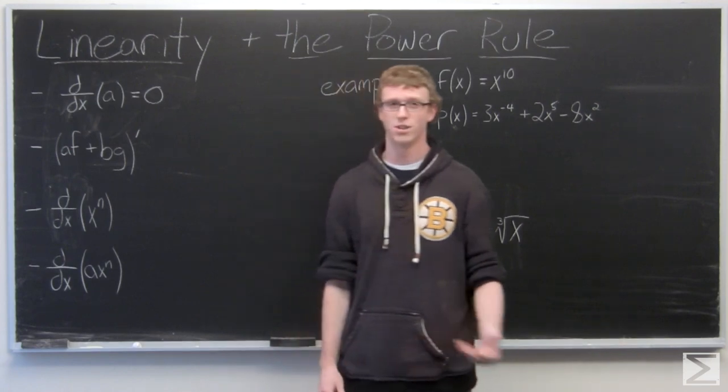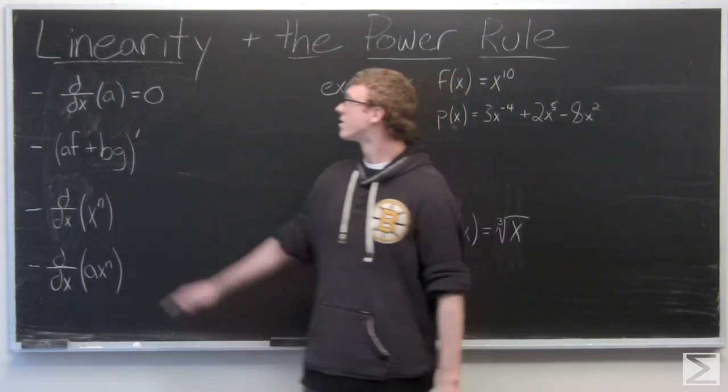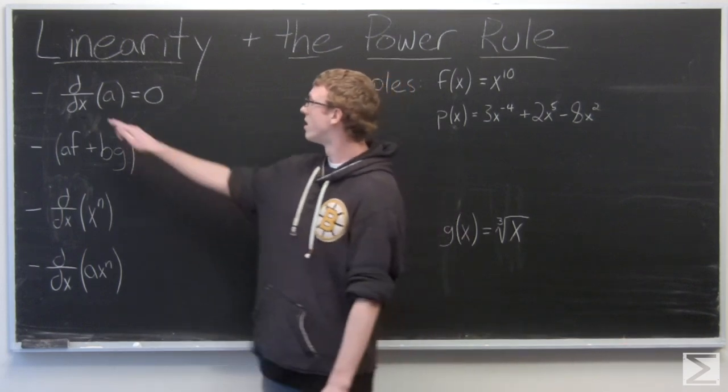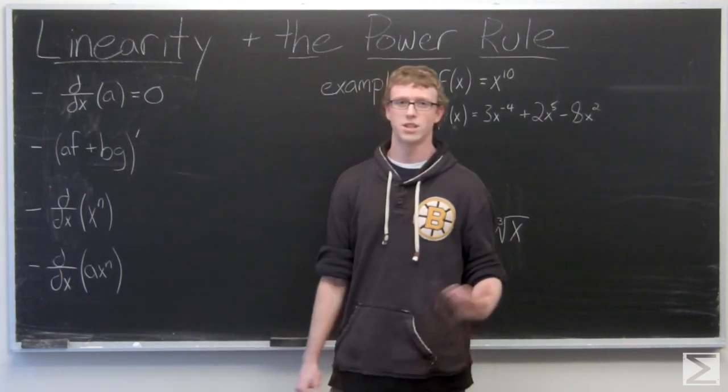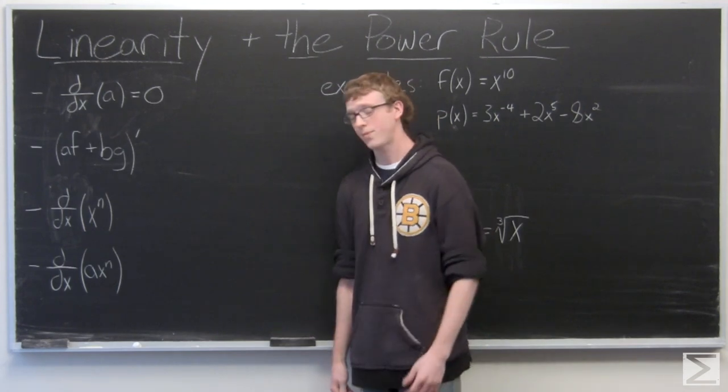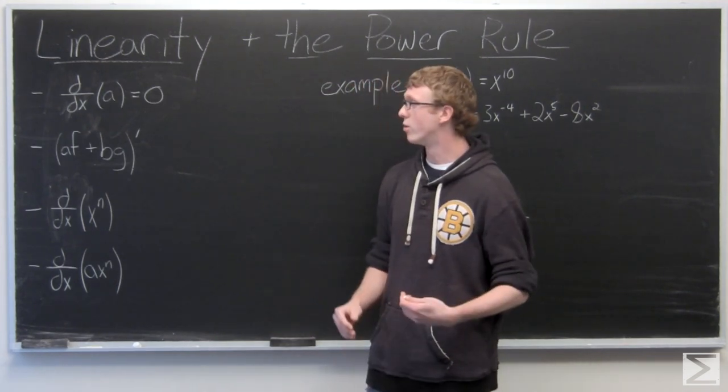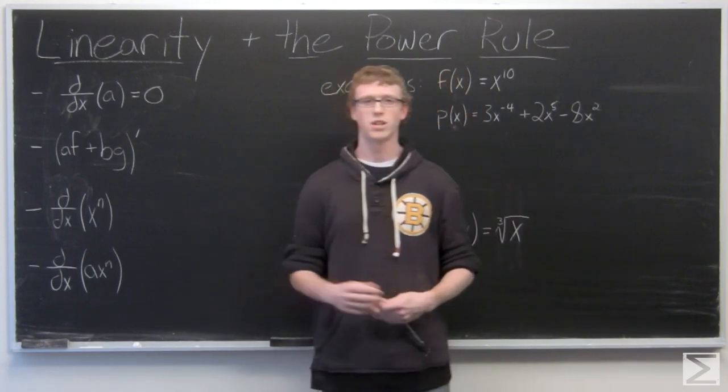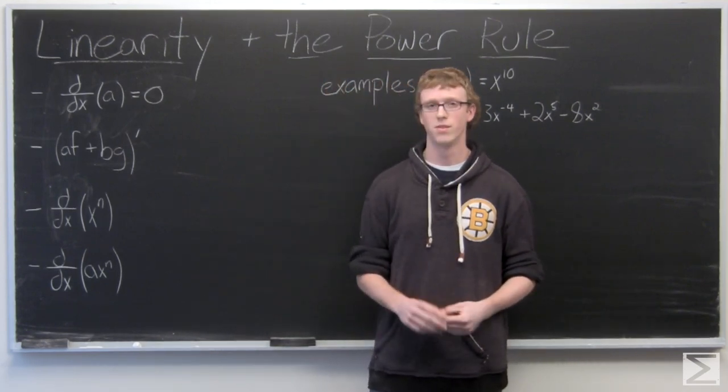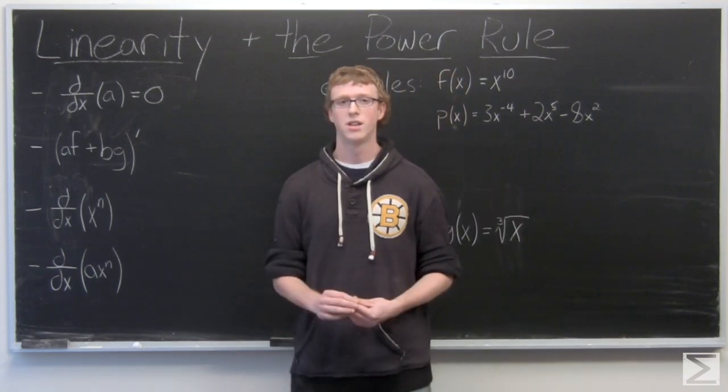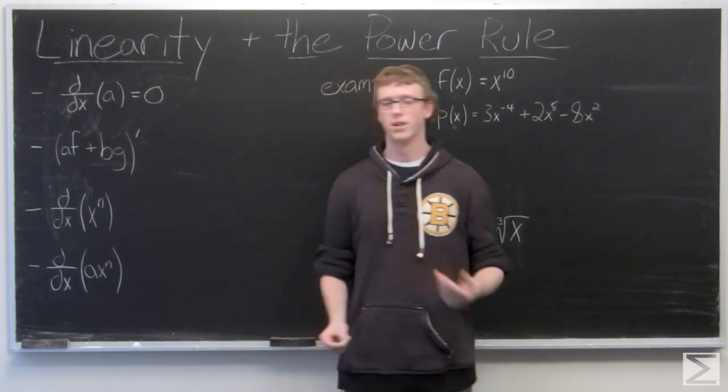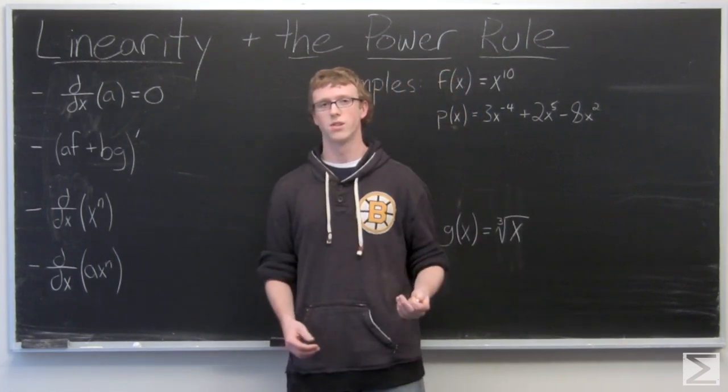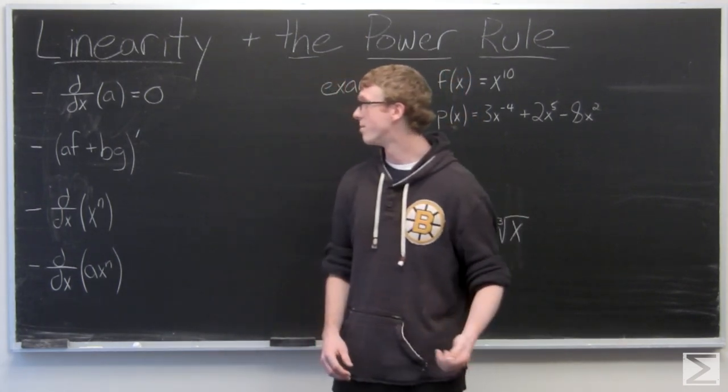So the first thing we're going to take a look at is the derivative of a constant. So we have two notations here for derivative: d over dx and the prime notation. So the derivative of a constant is simply zero. Now the power rule sometimes deals with variables to the zeroth power, which is just a constant. So the derivative of a variable function that's to the zeroth power, well it's simply going to be a constant. So that derivative of that type of function is going to be zero.